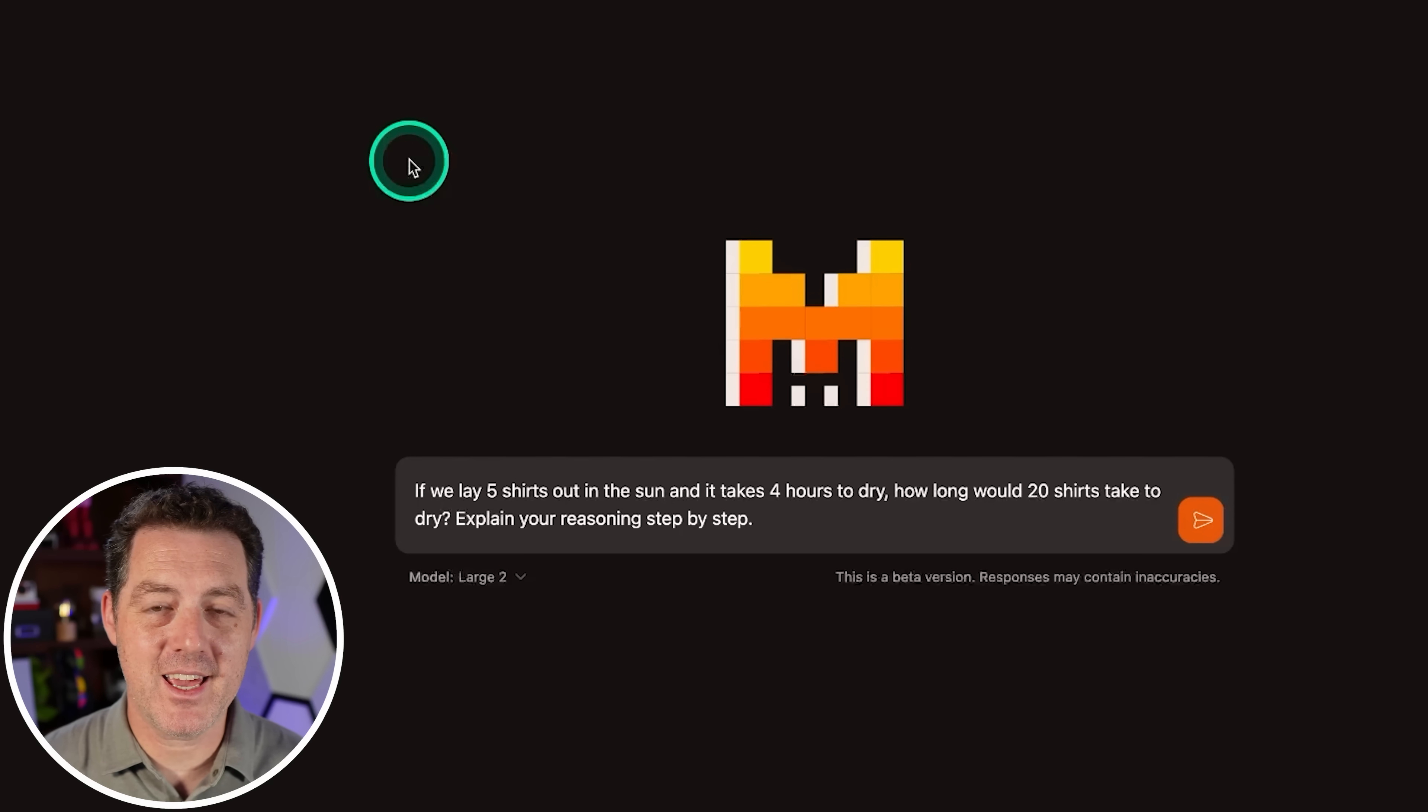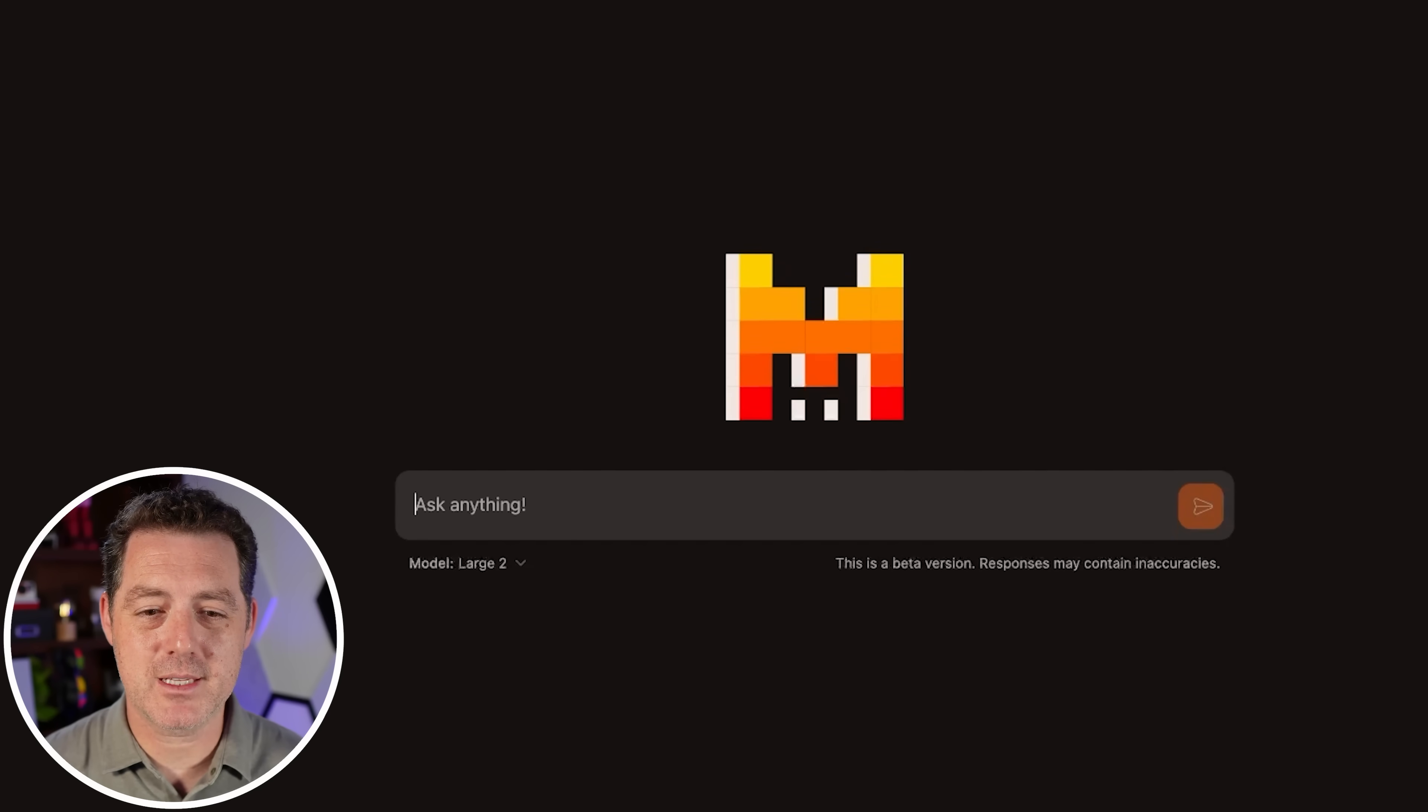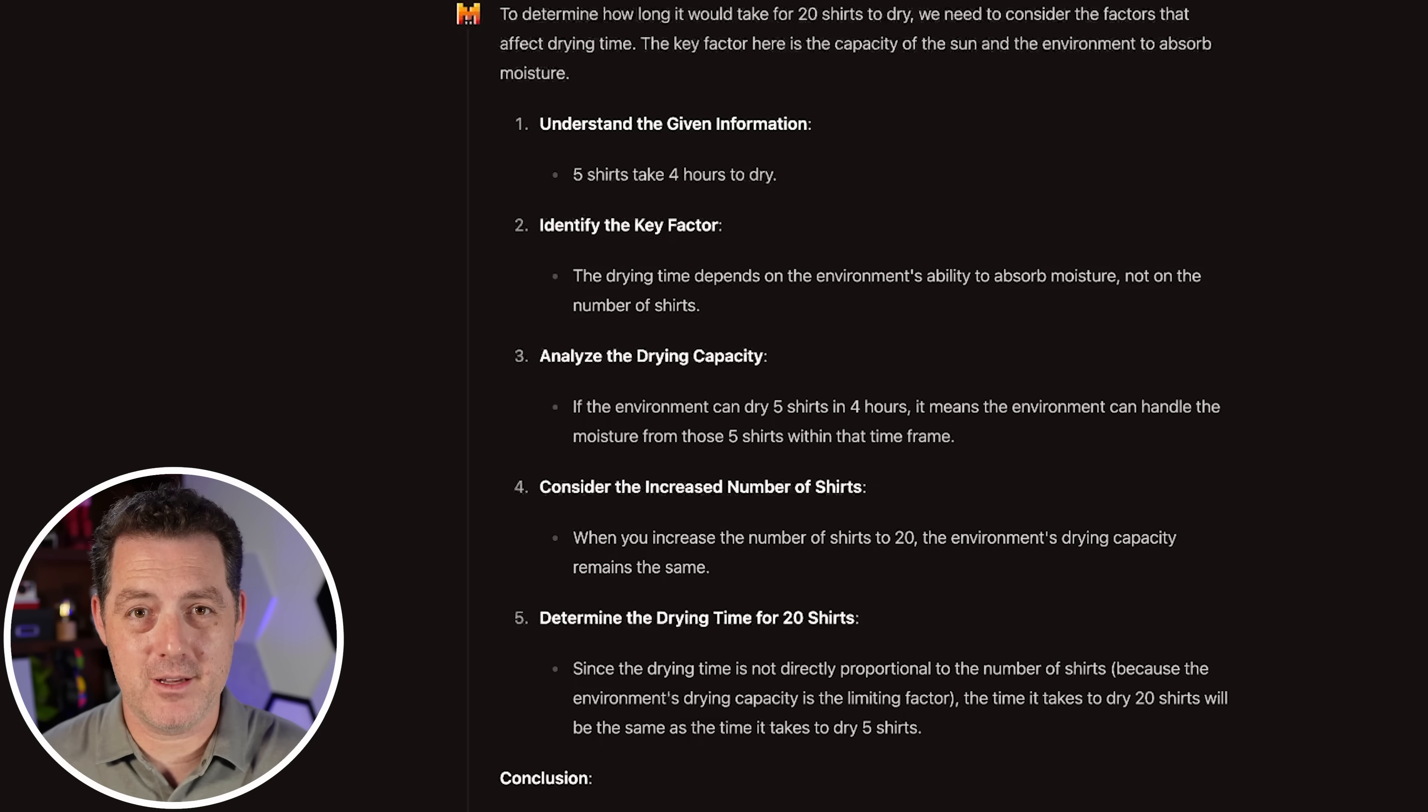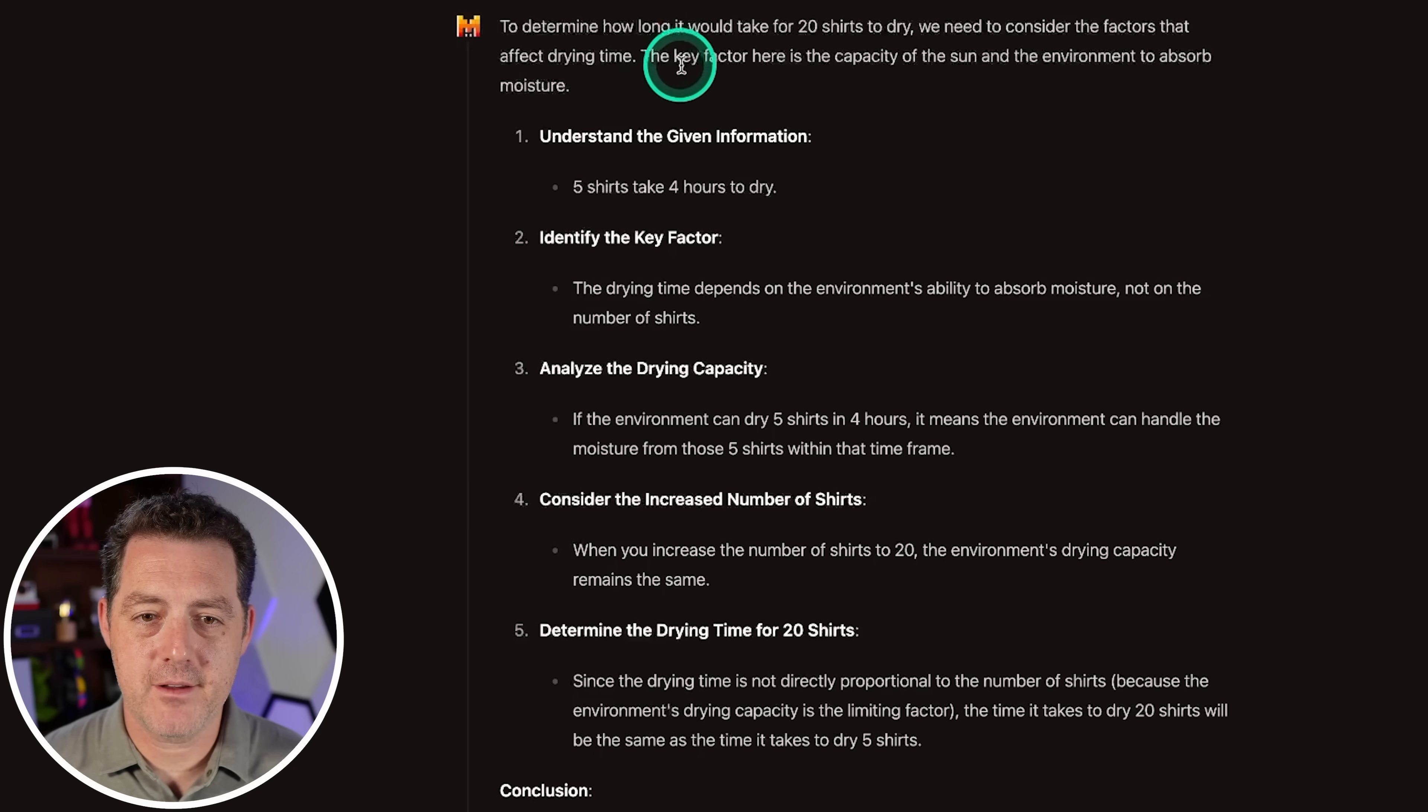All right. Next, a little bit of logic and reasoning. If we lay five shirts out in the sun and it takes four hours to dry, how long would 20 shirts take to dry? Explain your reasoning step-by-step. So what we're looking for is an explanation of, is it doing serialized drying or parallel drying? Okay. So we need to consider the factors that affect drying time. The drying time depends on the environment's ability to absorb moisture, not on the number of shirts. Correct. If the environment can dry five shirts in four hours, it means the environment can handle the moisture from those five shirts within that timeframe. When you increase to 20, the drying capacity remains the same. Since the drying time is not directly proportional to the number of shirts, the time it takes to dry 20 shirts will be the same. That is absolutely correct. And that is a pass.